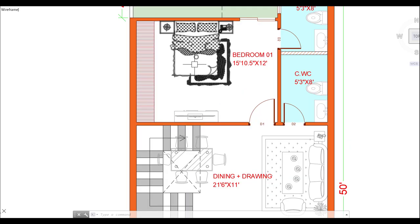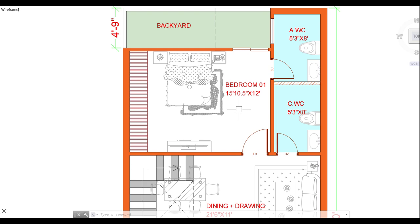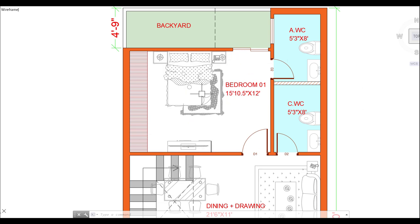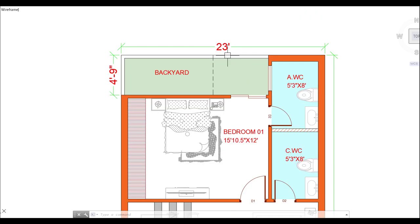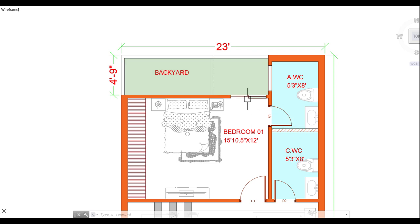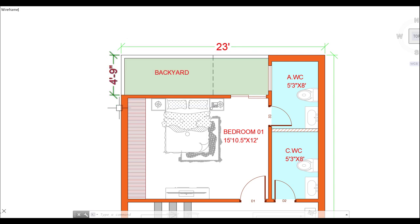Now let's go to our first bedroom. The size of this bedroom is 15 feet 10.5 inches by 12 feet, which is a very big bedroom. You can place your cupboard, bed, and TV unit, and there is also lots of free space. There is a sliding door which is 4 feet 9 inches wide.